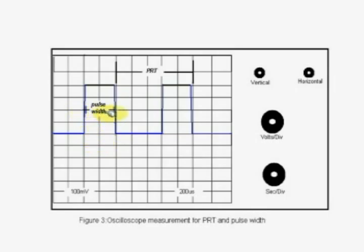You can measure from here to here on the oscilloscope display, and that gives you the PRT. At half the height, if you measure, that gives you delta T half. In the experiment, the chopper speeds are kept at different values so that we can get pulses of different PRTs and delta T half values.